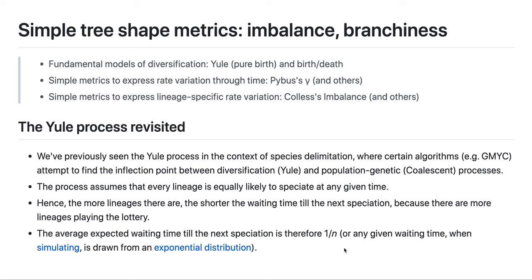So the Yule process simply assumes that every lineage is equally likely to speciate or to split at any given time. So if you start out with one lineage, at some particular rate that lineage might split.